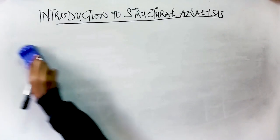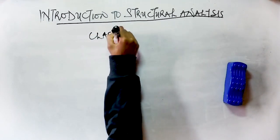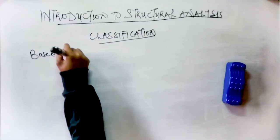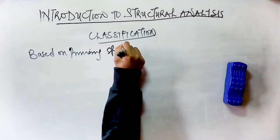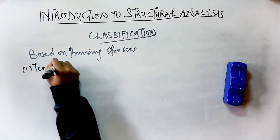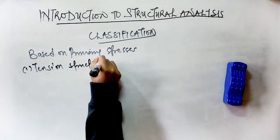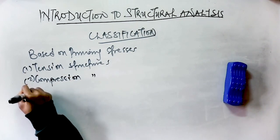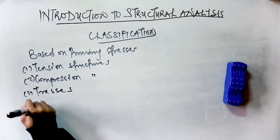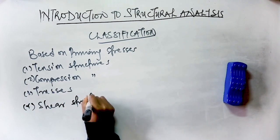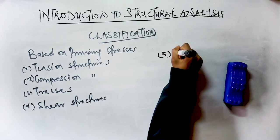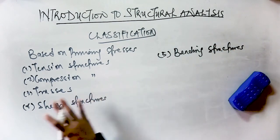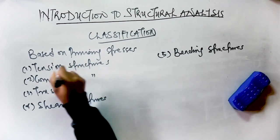The first subtopic is classification of structures. Structures are classified in various ways, but the first comprehensive method is classification based on the type of primary stresses that may develop in their members under major design loads. They are classified into five types: tension structures, compression structures, trusses, shear structures, and bending structures.